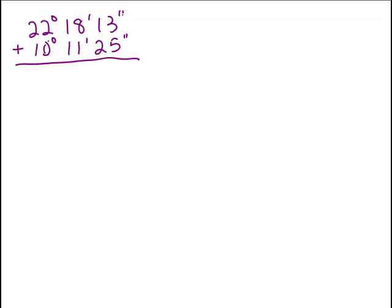So you sort of line up your degrees and your minutes and your seconds and just add each separately. So I've got 32 degrees, 29 minutes, and 38 seconds.